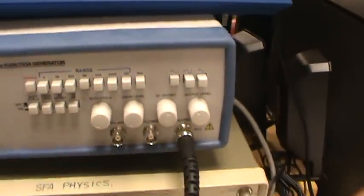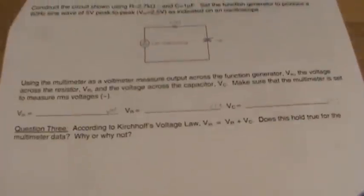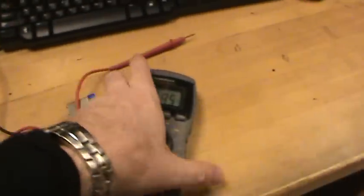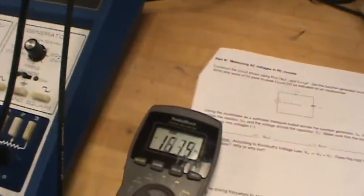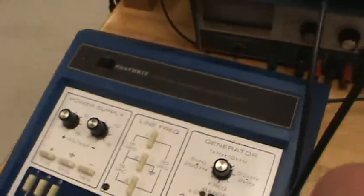Now this part of the lab over here says to measure with a multimeter the voltage drops across each component. So what you would do there is you would take your positive and negative leads and put them across each component.